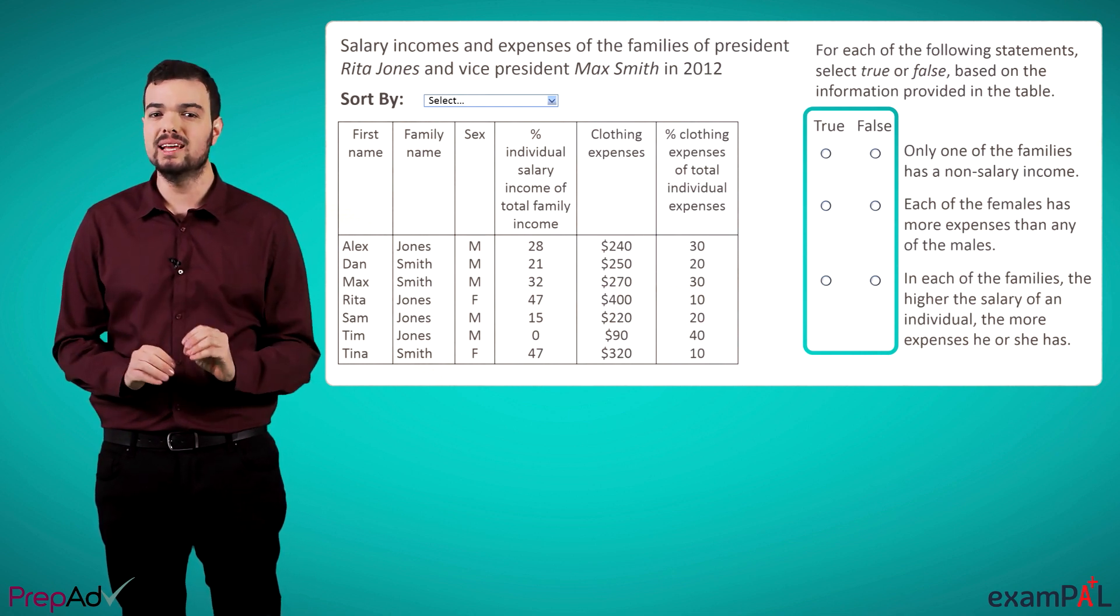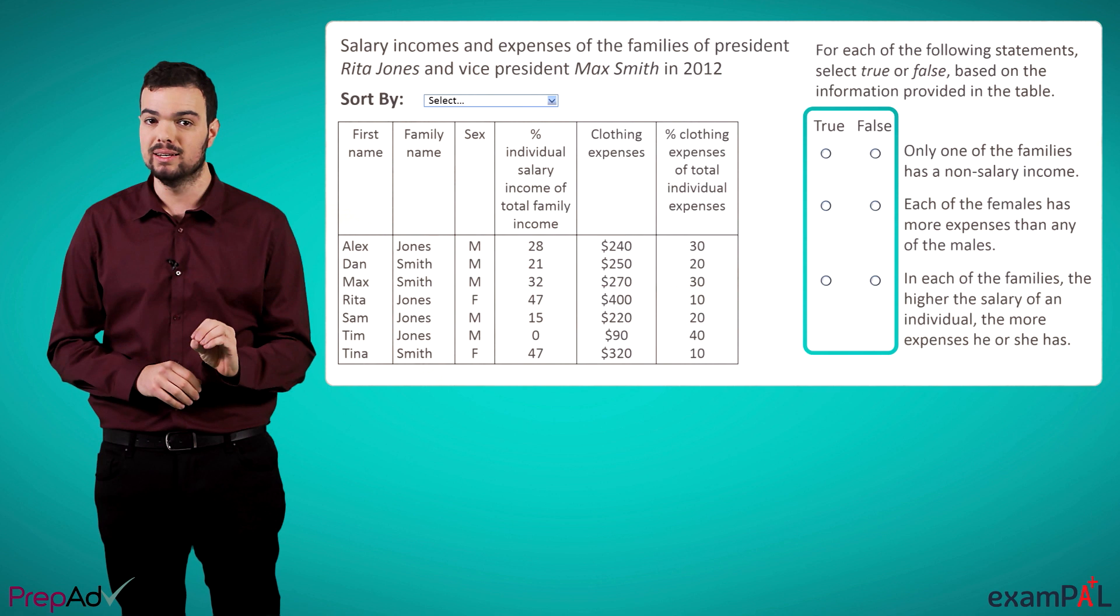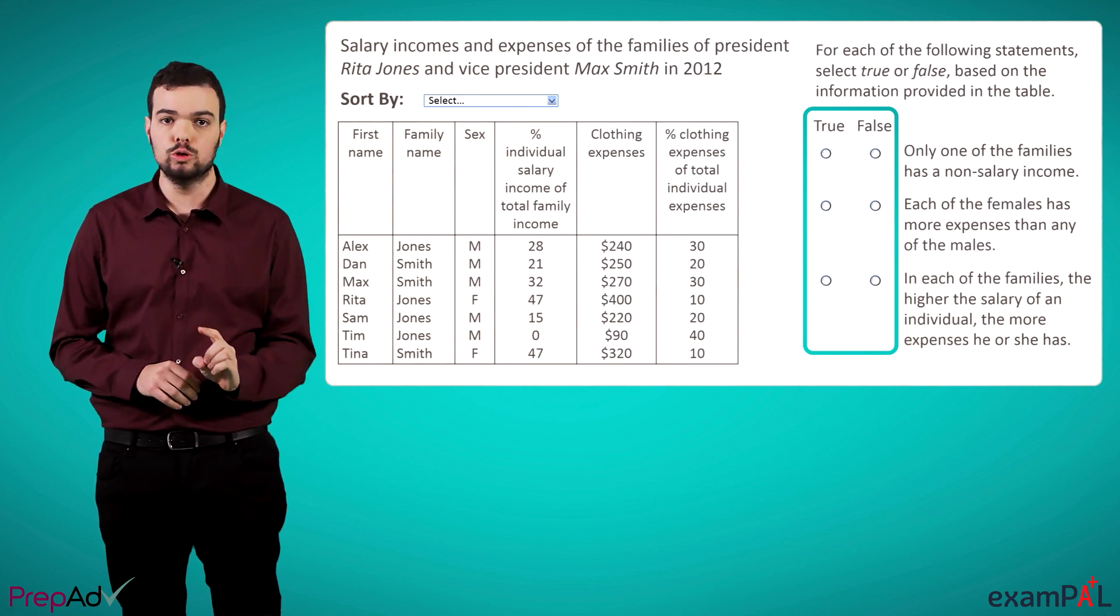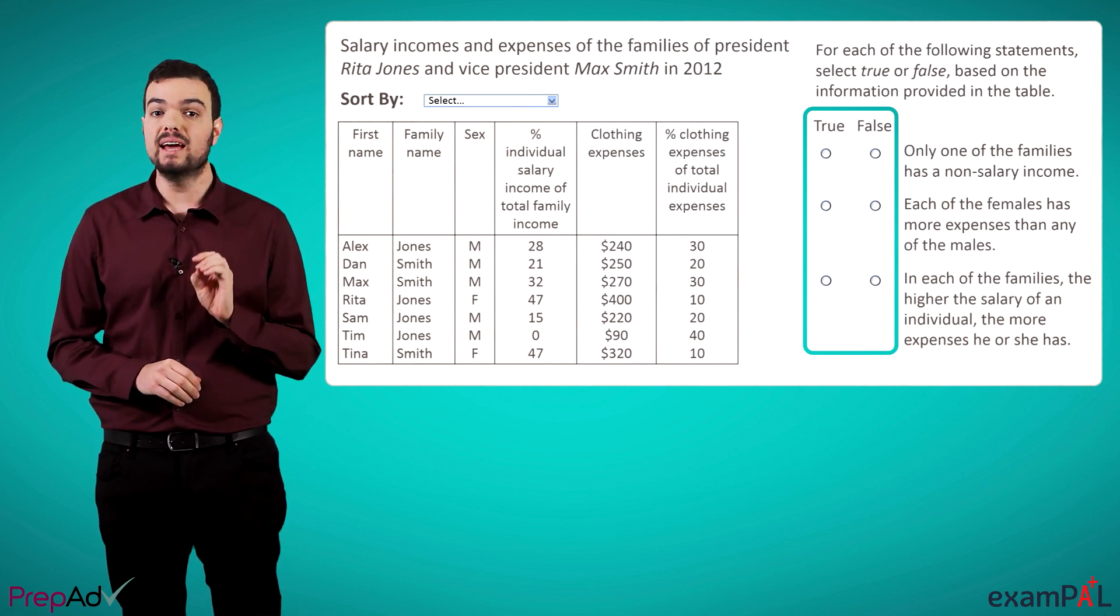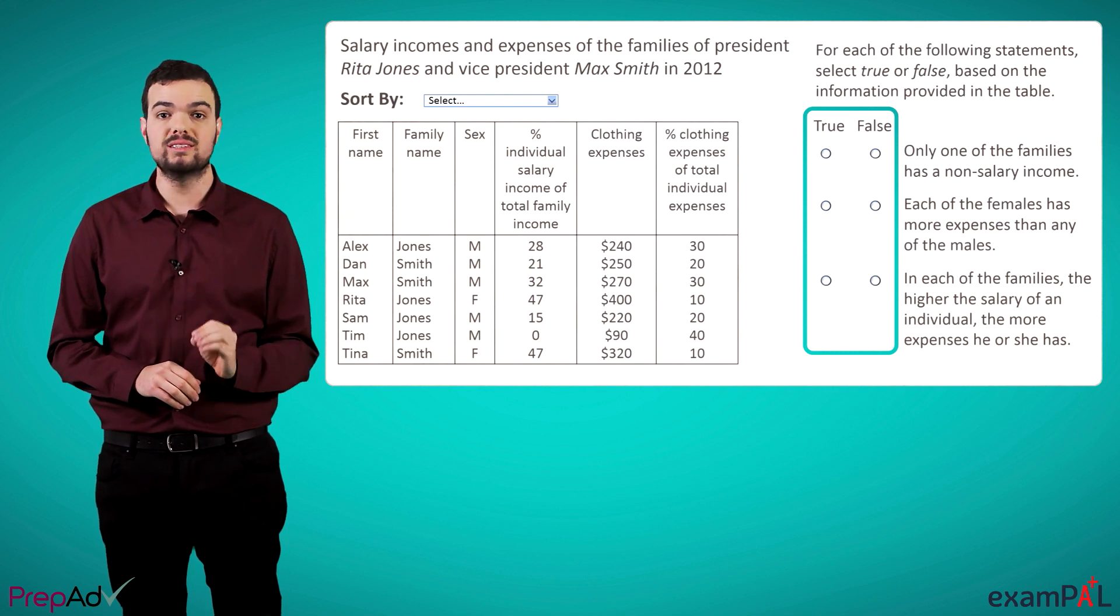What's important to realize is that there is no partial credit. Each table is a single question, and in order to get points for it, we have to get all three true or false statements right.